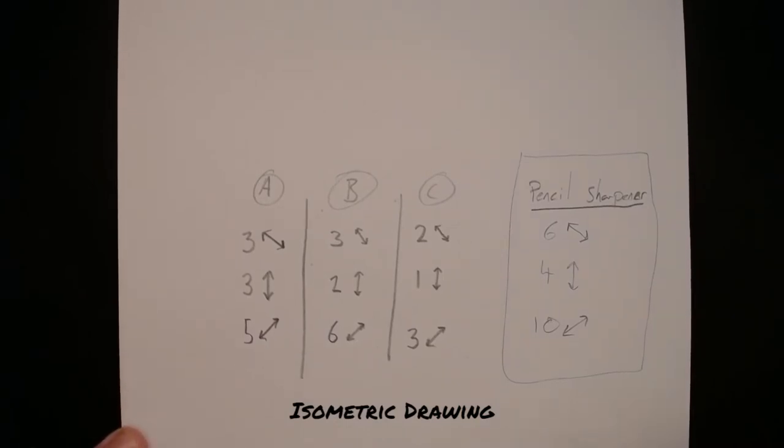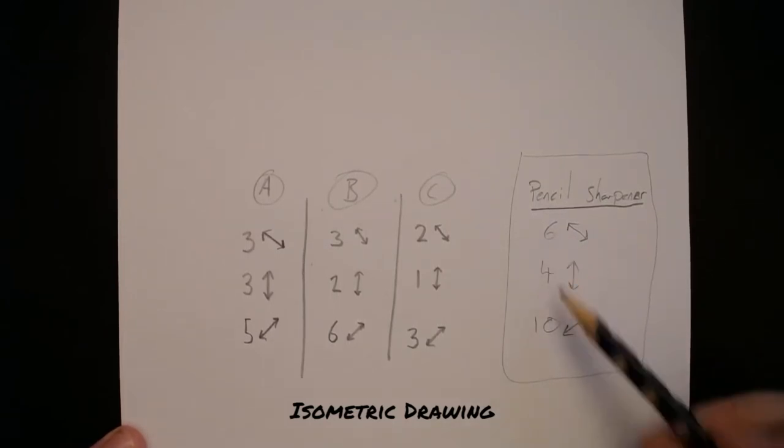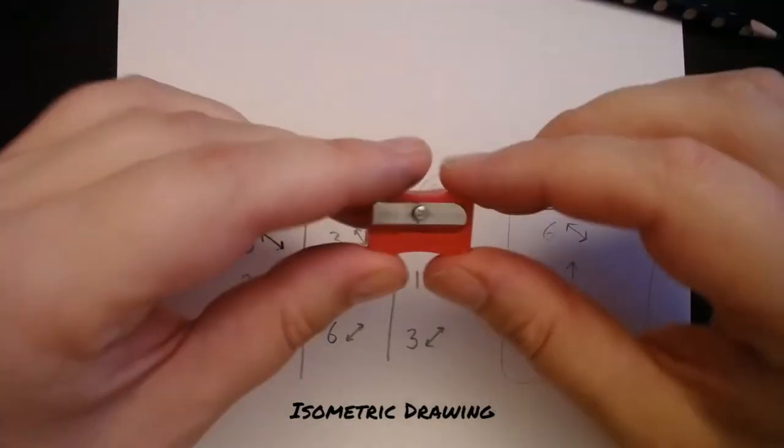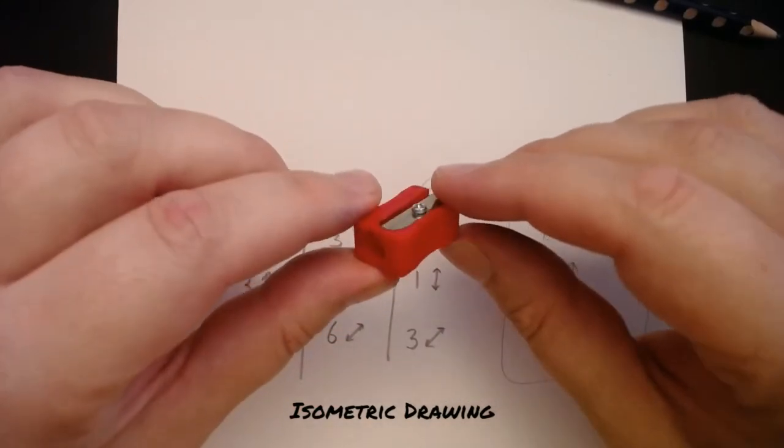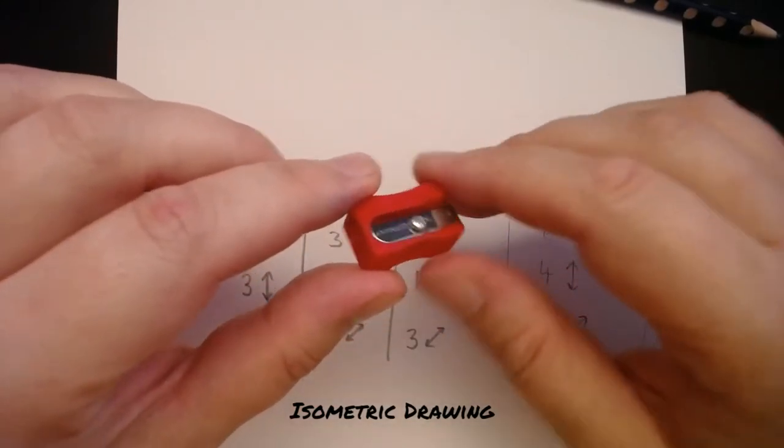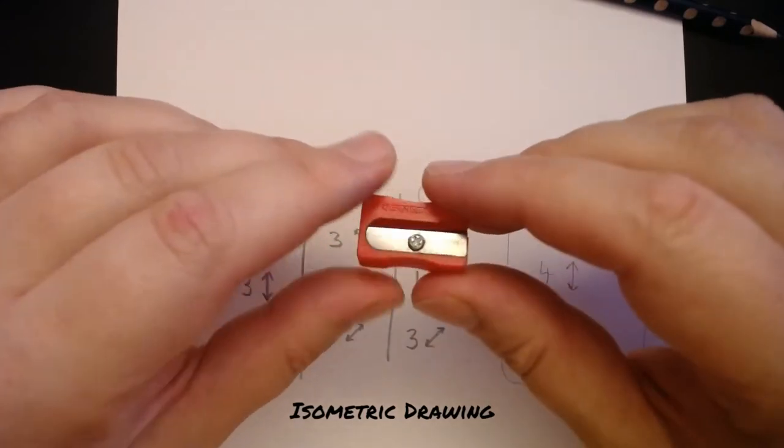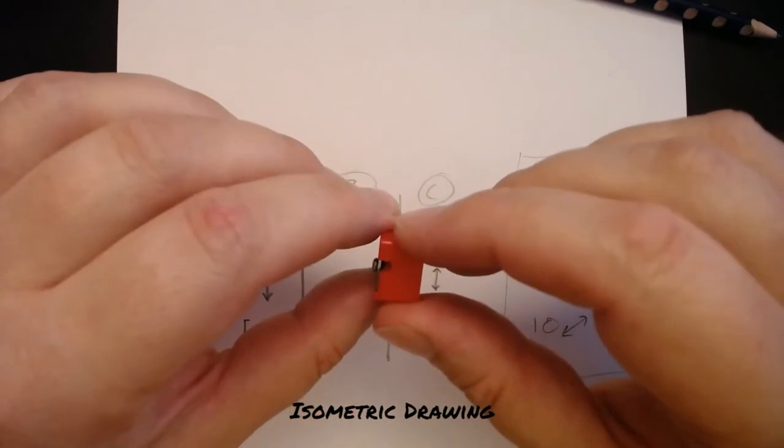The first thing we're going to want to do on that piece of isometric paper is draw a cube that's 6 by 4 by 10. That should give you a pretty accurate representation of a pencil sharpener. If you've got a pencil sharpener at home like this, it's great if you can have it on hand so you can look at it during these videos.